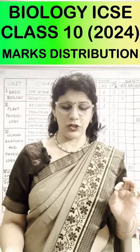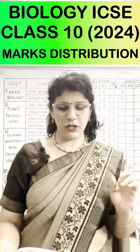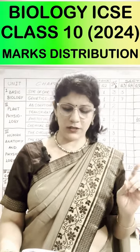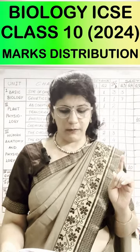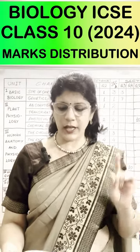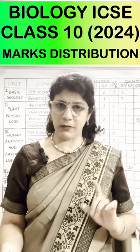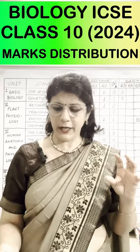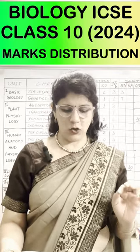Unit 2 Plant Physiology: Absorption 2 marks, Transpiration 1 mark, Photosynthesis 4 marks, Chemical Coordination 1 mark in Section A, and 14 marks in Section B — total 22 marks.